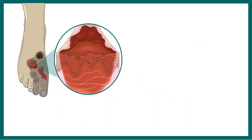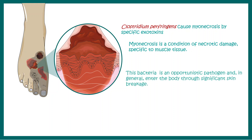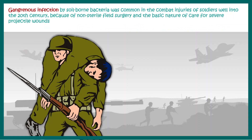This lesion is also known as myonecrosis — that means a necrotic damage to the muscle tissue — and this is caused by the exotoxins which are secreted by Clostridium perfringens. The bacteria is an opportunistic pathogen, meaning that whenever there is a breach in the skin barrier, the bacteria can enter the skin and cause severe damages.